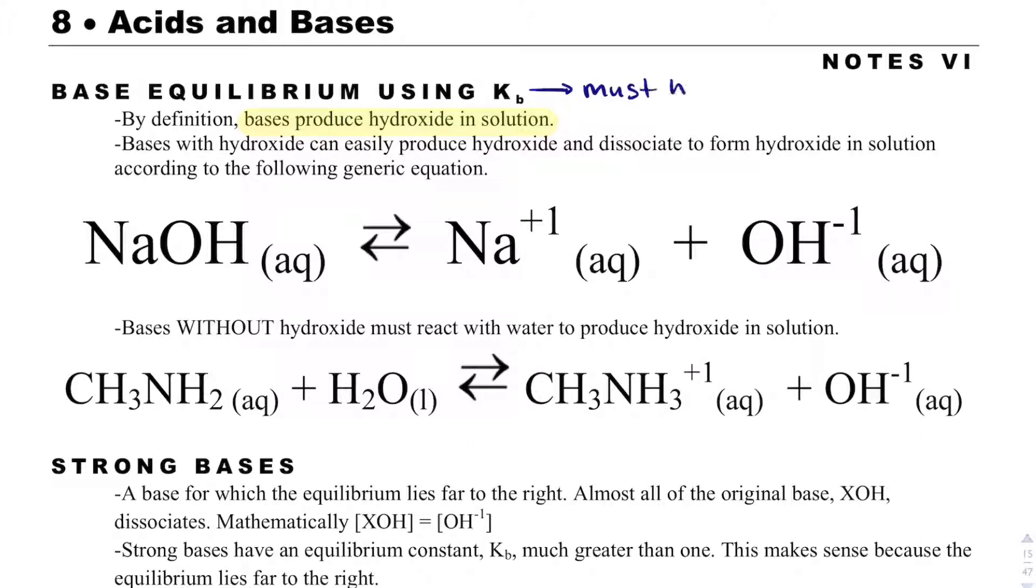That's very important. Just like with Ka, you must have H-plus or H3O-plus as a product. With Kb, you need to have hydroxide as a product.